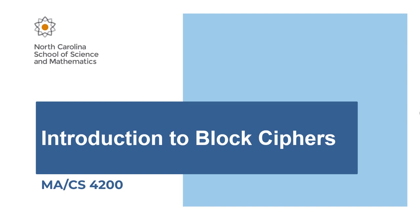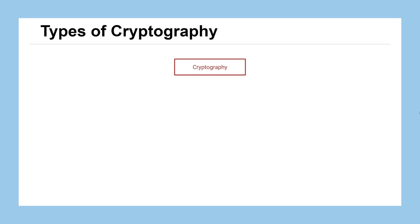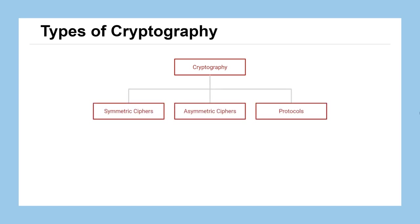In this lesson, we'll be looking at a new type of encryption known as a block cipher. So far in this course, we've covered various aspects of cryptography, which can be divided into three different categories: symmetric ciphers, which are the ciphers we've seen so far; asymmetric ciphers, which is where we're headed in the next few lessons; and then the specific protocols that put those into action.